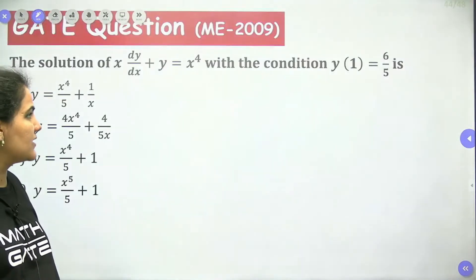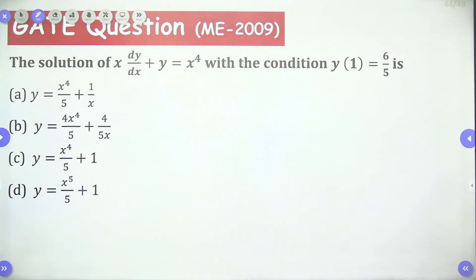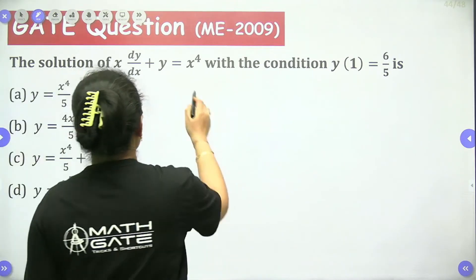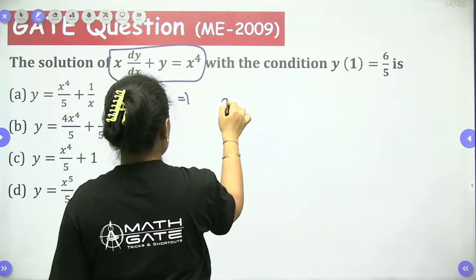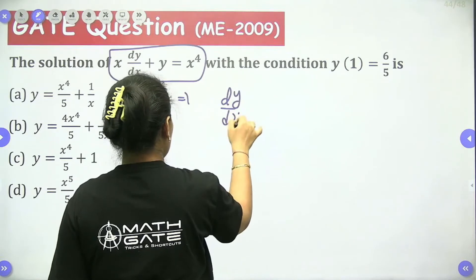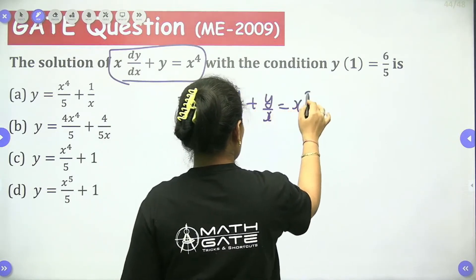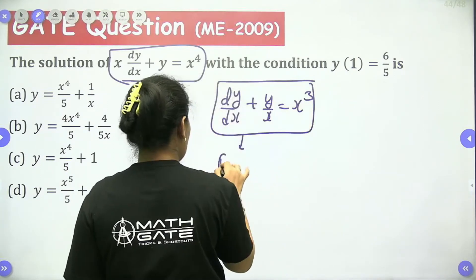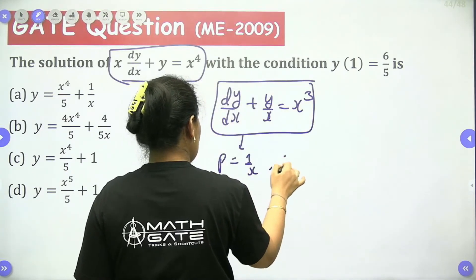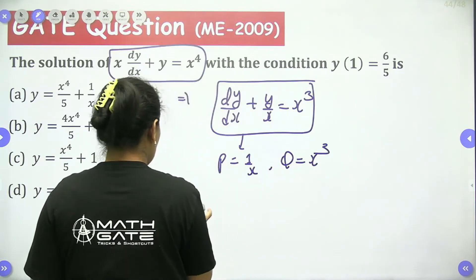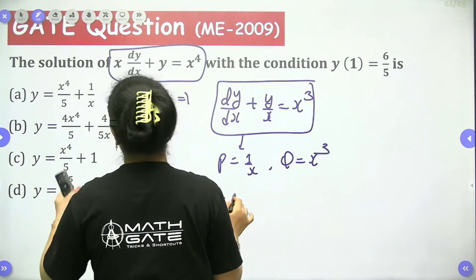Let's see the next question. x·dy/dx gives dy/dx plus y/x equals x cubed. So p equals 1/x and q equals x cubed. Let's find the integrating factor: e to the power of the integral of 1/x dx gives e to the power log x, so the integrating factor is x.